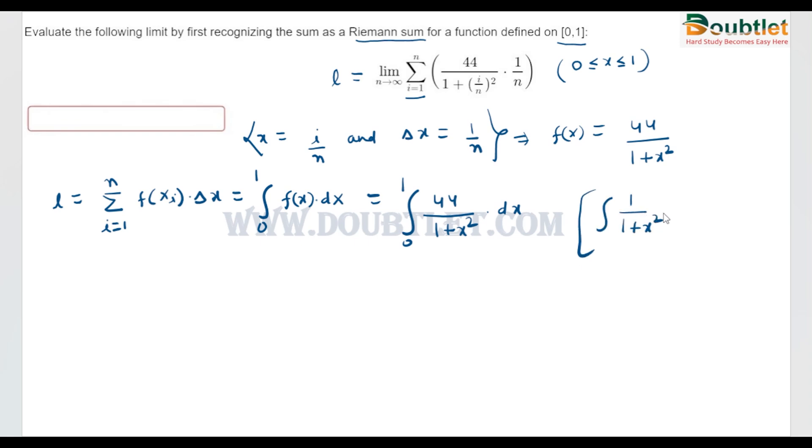We know that integration of 1 upon (1 + x²) dx is equal to tan inverse x plus C. So after solving this, L equals 44 is a constant so it will be thrown out of the integral.